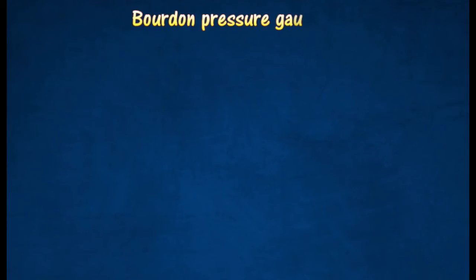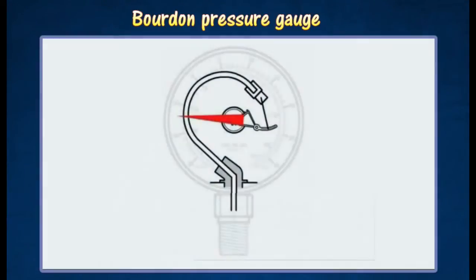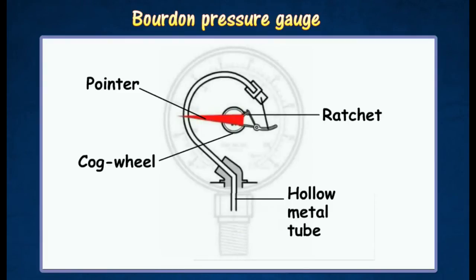A Bourdon gauge is used for measuring very high pressure, such as the pressure of steam in a boiler or the pressure of compressed gases. It consists mainly of a flattened and hollow metal tube shaped like a hook.